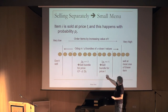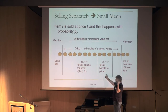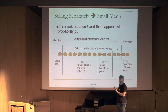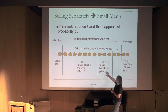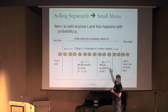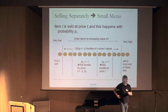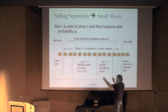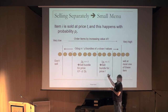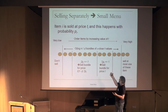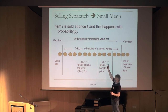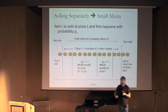There are two cases for each bundle. If the total probability of items in the bundle is relatively small, I can sell the whole bundle for price t. A buyer who wants even one of these items will be willing to pay t for the whole bundle — they get more items than needed, but they're paying a price corresponding to just one item.